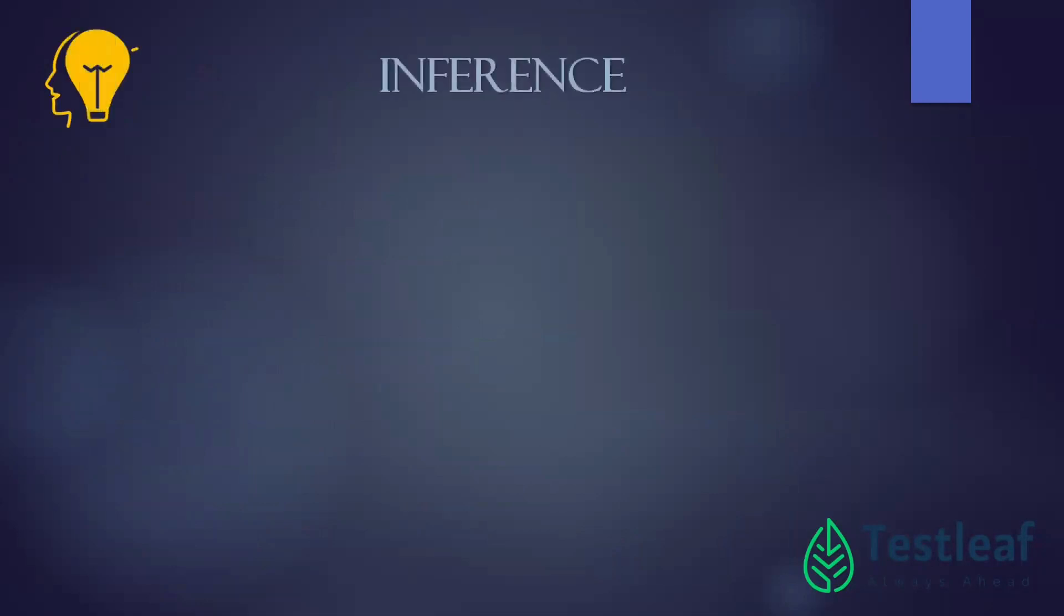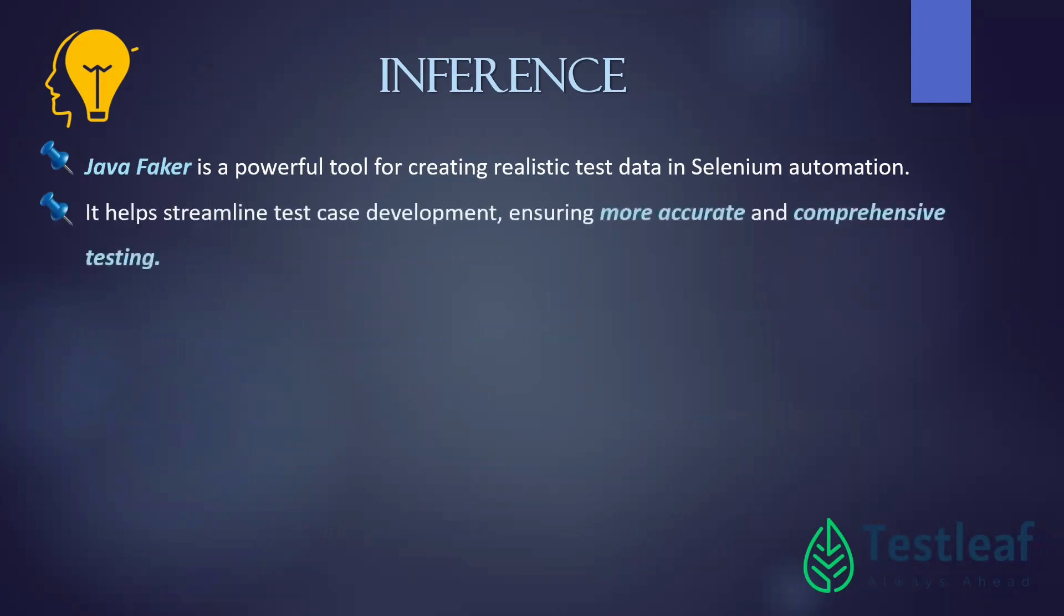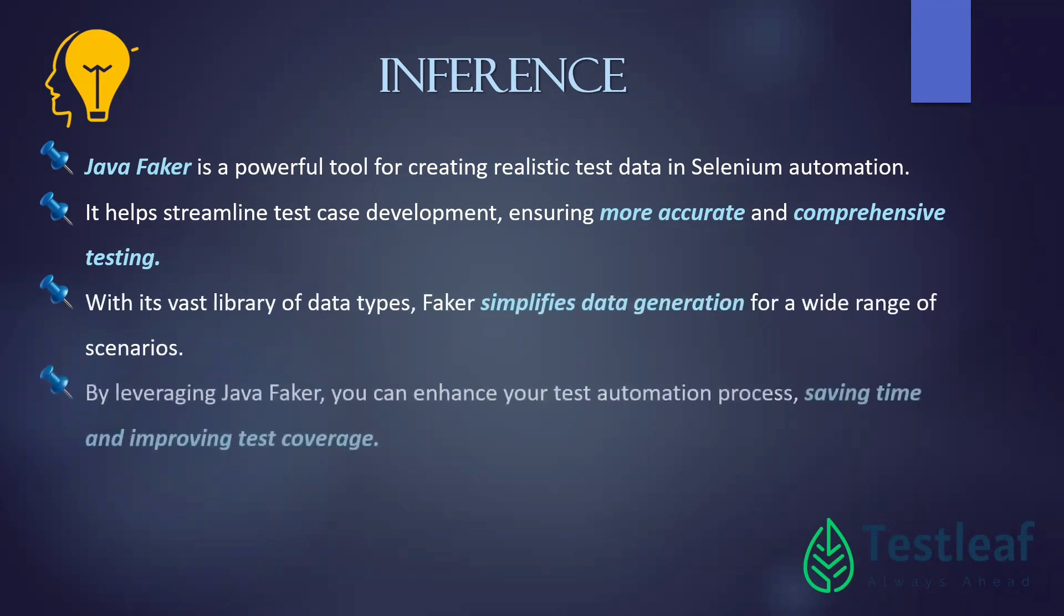The conclusion is Java Faker is a very powerful tool for creating realistic test data in Selenium automation. It helps streamline test case development, ensuring more accurate and comprehensive testing. With this vast library of data types, Faker simplifies data generation for a wide range of scenarios. By leveraging Java Faker, you can enhance your test automation process, saving time and improving test coverage.